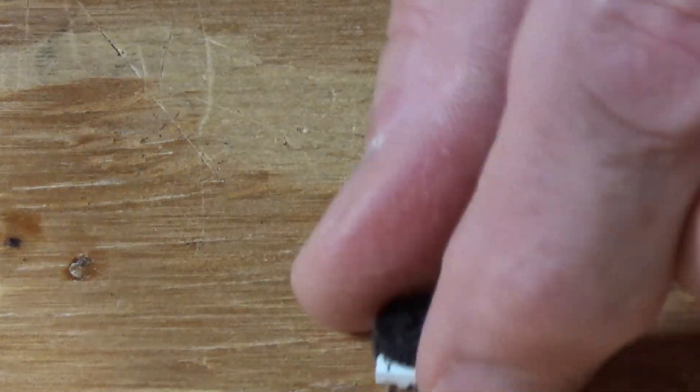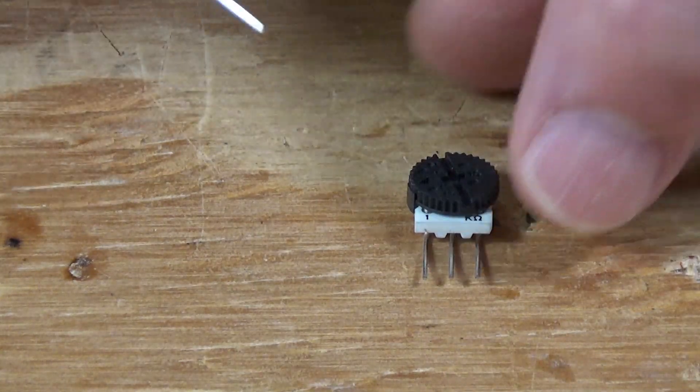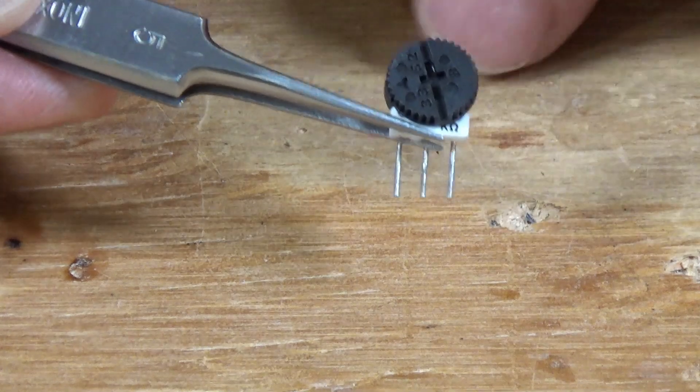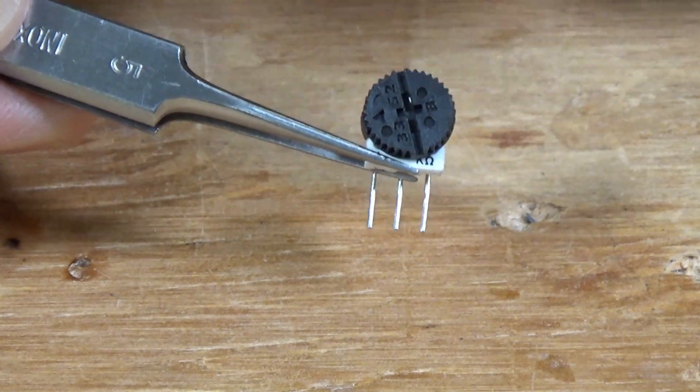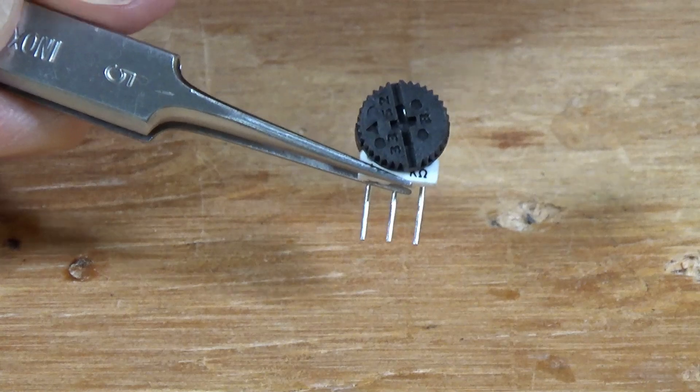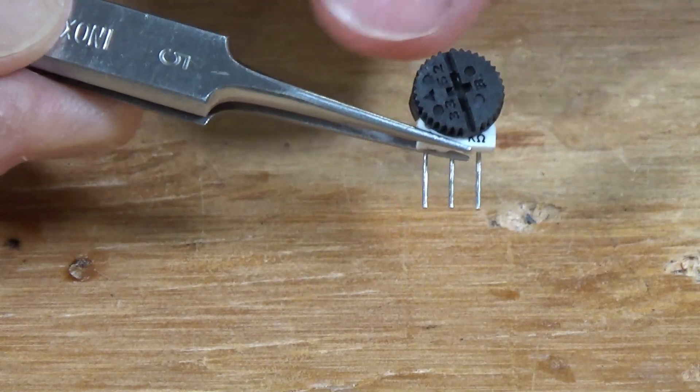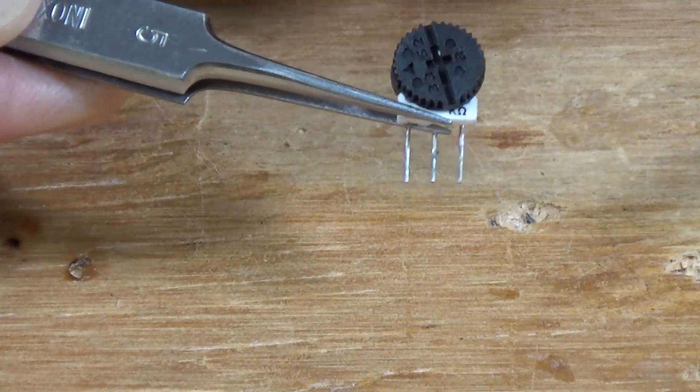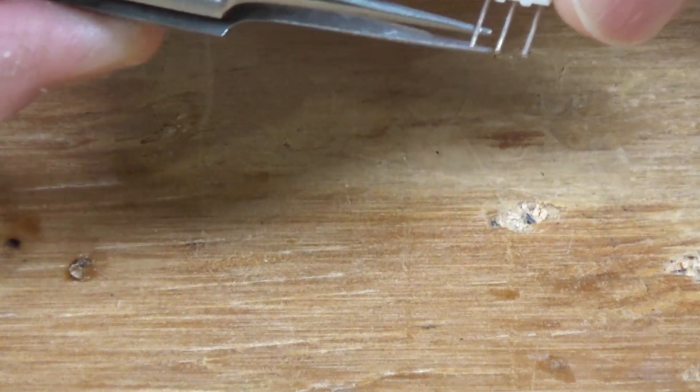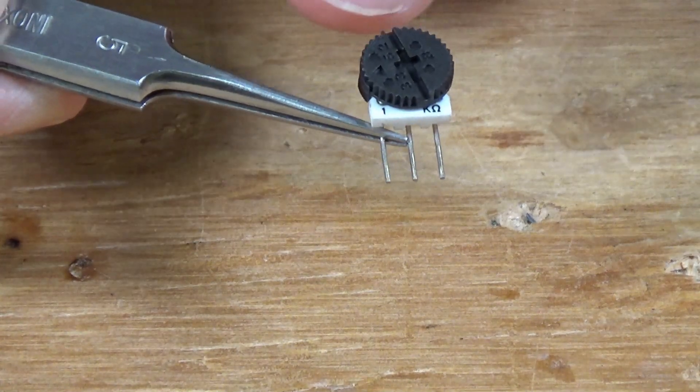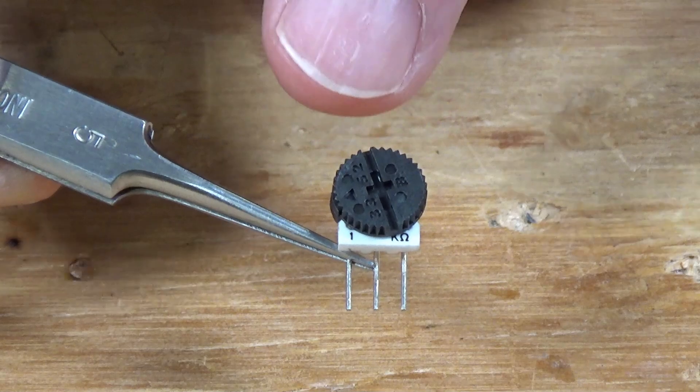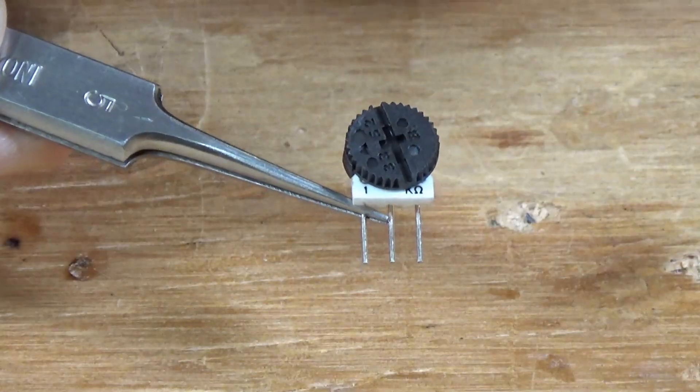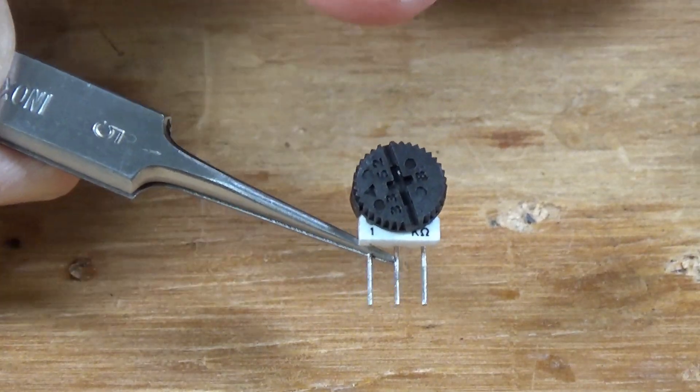Now, another thing that I'm going to use here is this trim pot. Now, I talked about using trim pots with LEDs back in the video I did on lighting structures on your model railroad. And if you go back and take a look at that, you can see. And what I'm going to do is I'm going to use this to basically control the lighting of the voltage going to the LED. Because this is basically a variable resistor.